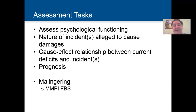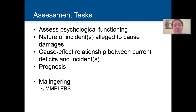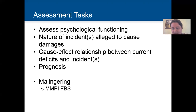You want to look at the nature of the incident or incidents alleged to cause the damages — people will readily talk about this. You need to look at it in terms of the distress compared to the average person. You want to get as much data as possible to help determine if the distress is attributable to that particular incident. Then you want to look at the cause-effect relationship between the current deficits in functioning and whatever that incident or incidents were. Form an opinion with reasonable psychological certainty that the deficit is caused by the incident.